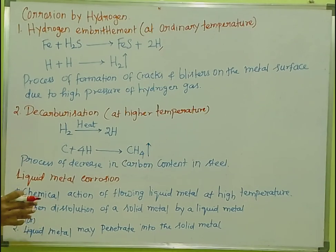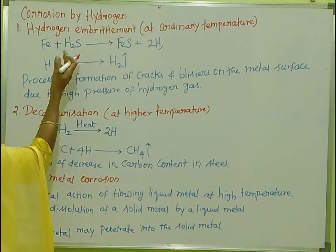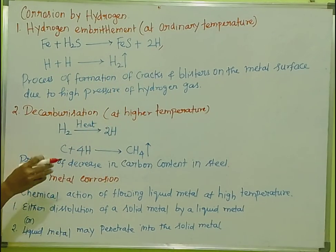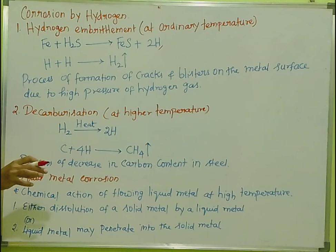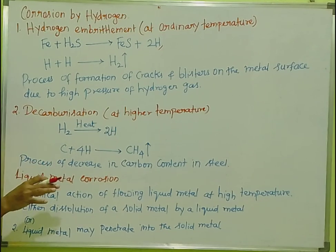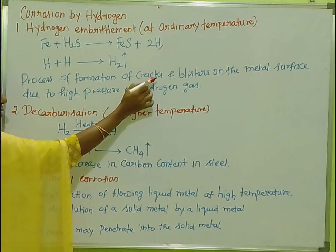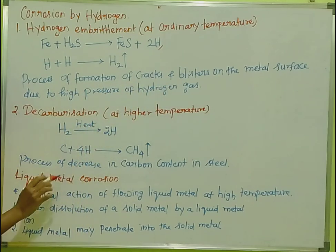When atomic hydrogen collects in the voids, it creates high pressure. This high pressure acts on the surface of the metal. If the iron is at ordinary temperature, the atomic hydrogen creates very strong pressure on the metal surface. Atomic hydrogen is produced and it releases high pressure on the metal surface. This is the process of formation of cracks and blisters on the metal surface due to high pressure of hydrogen gas.